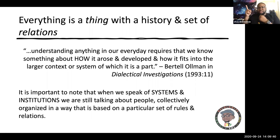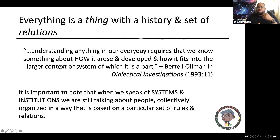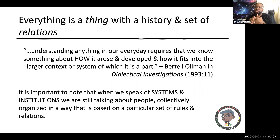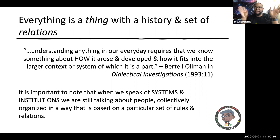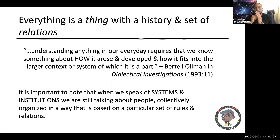Everything is a thing with a history and set of relations. Understanding anything in our everyday requires that we know something about how it arose, developed, and how it fits into the larger context of the system of which it's a part. When we talk about systems, it's easy to get lost — it can sound very abstract, like some big thing hanging in the sky. But when we speak of systems and institutions, we're talking about people collectively organized at some scale for a particular set of rules, relations, interests, and purposes.